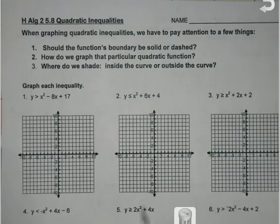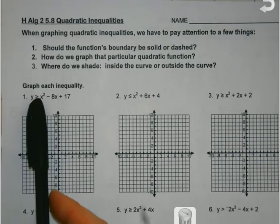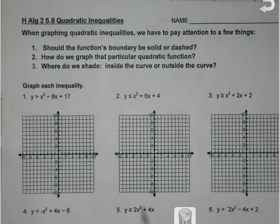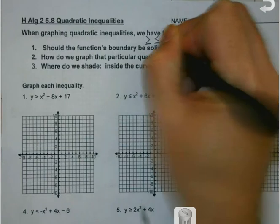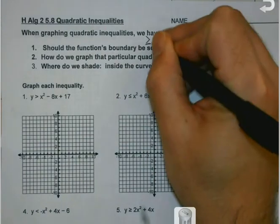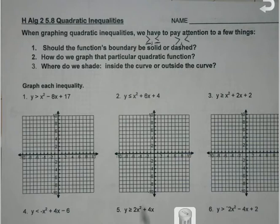All right, today we are going to be taking a peek at quadratic inequalities. We've graphed parabolas before, but we're going to work a little bit today on figuring out how to find solutions, or in this case, where we're going to shade to actually turn our inequalities into a solution. So a couple things to notice right off the bat. Number one, should the function's boundary be solid or dashed? That's determined by our inequality arrow. If we have or equal to, it's going to be solid. If we have just greater than or less than, it's going to be dashed to show that difference.